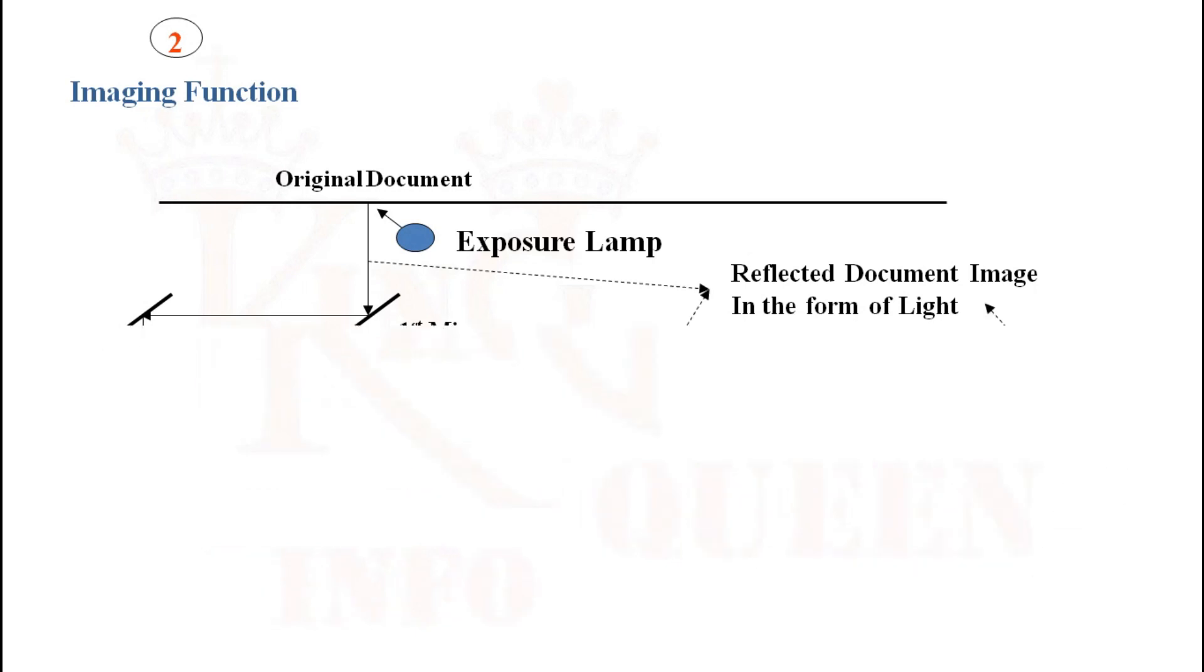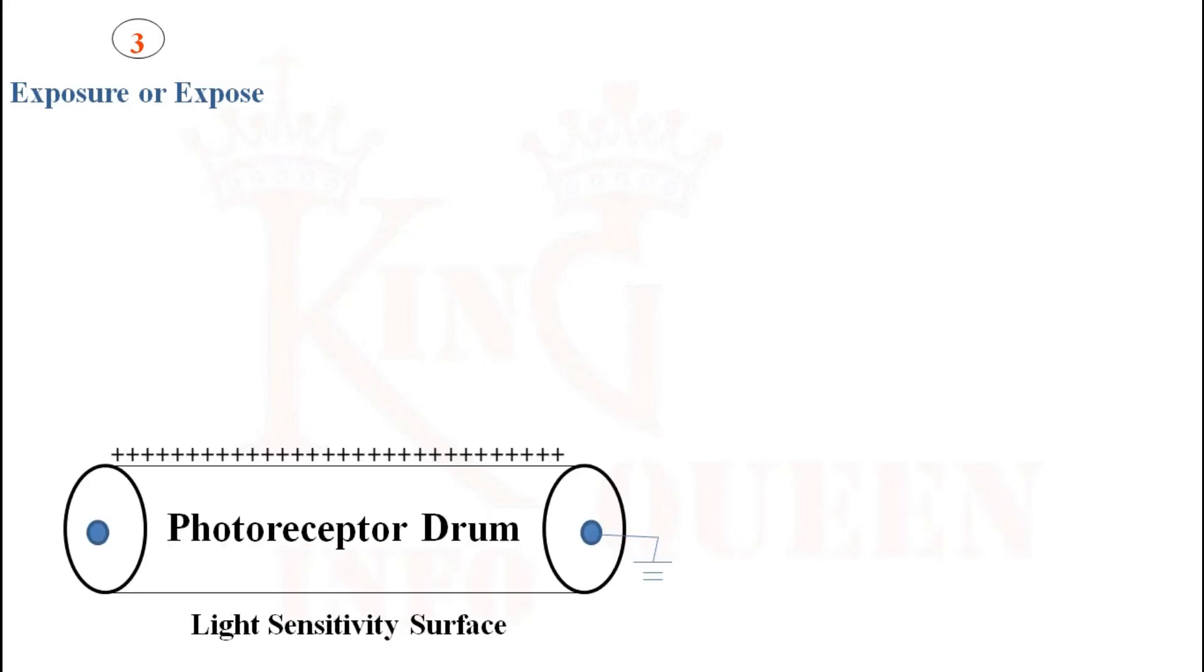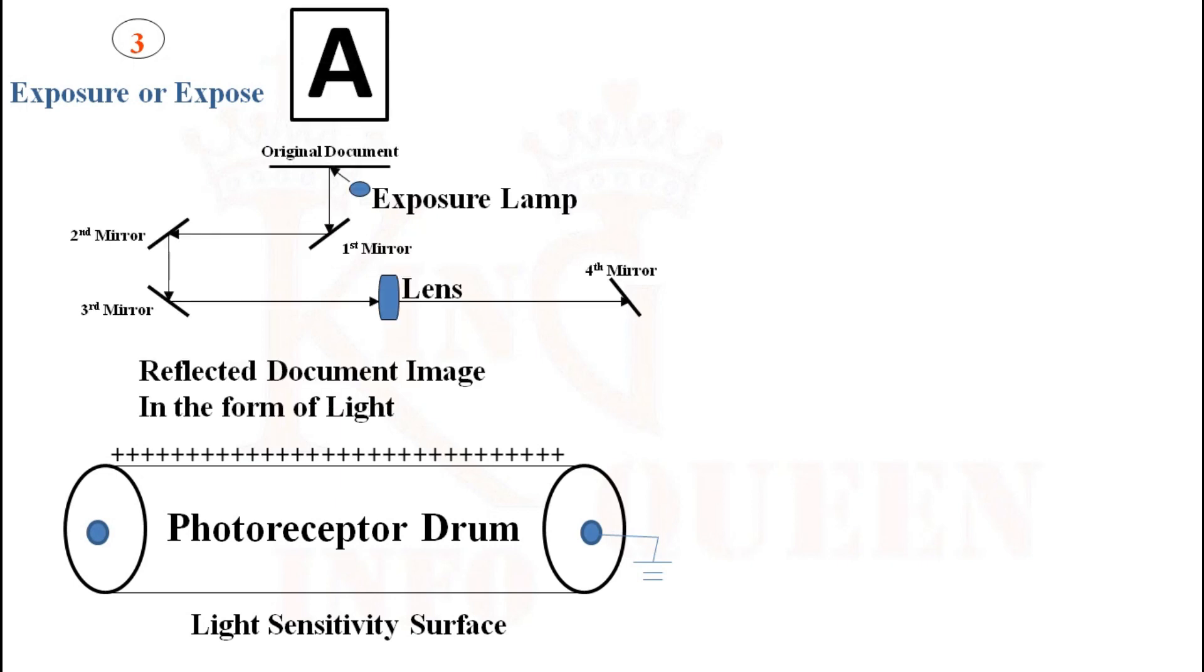Step 3: Exposure. In this step, the uniformly charged photoreceptor drum is exposed to the document image in the form of light reflected from the fourth mirror. Wherever the light falls onto the photoreceptor non-image area, the photoreceptor drum is discharged.